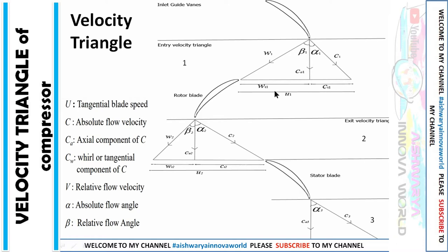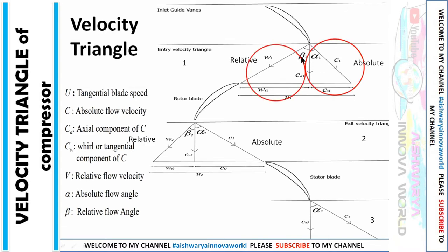WT is the tangential component of the relative flow velocity. CA is the axial component of the absolute flow velocity — it is the common line between the absolute and relative flow. Beta is the relative flow angle, and alpha is the absolute flow angle. You can remember: alpha is for absolute — both start with 'a'.